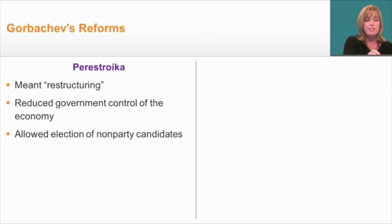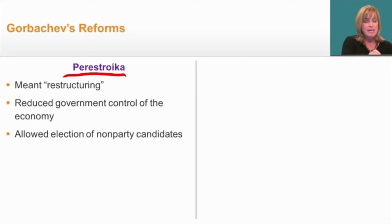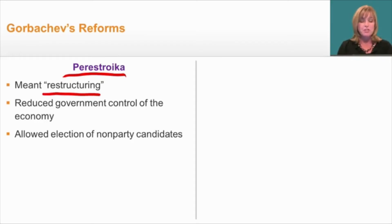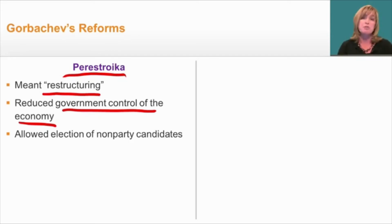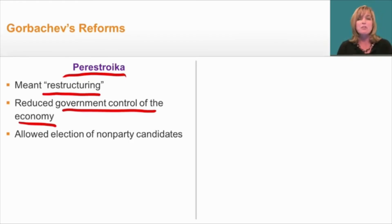There are two reform programs. The first is called perestroika, which in Russian means restructuring. The goal of perestroika was to reduce government control of the economy. Under a communist economic system, the government controls all the means of production and decides what's going to be produced and how much. By allowing some free market influences, Gorbachev felt that some of those shortage problems could be reduced. In addition, he also allowed the election of some non-party candidates.